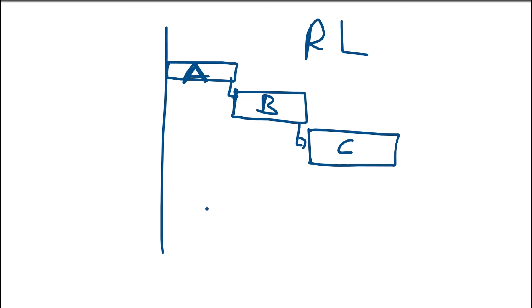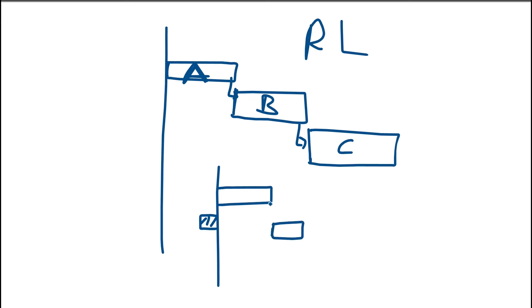Now let's consider a scenario whereby activity A has not started, but B has started. What will happen when you update your program is that the part of B that has started will be on the left-hand side of the data date, whereas the remaining part of B — let's call it B2 — will still respect the logic between itself and A. Then C will still follow activity B2. So it's retaining the logic: even though B has started, the logic between A and B will still be respected.